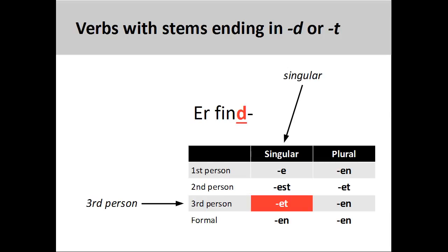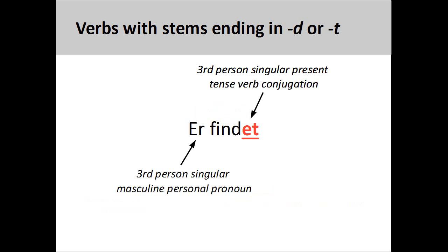We then need to find the correct third person singular verb ending on the chart. Here, the appropriate ending '-et' is marked in red. We then add that ending to the verb stem to produce 'er findet', 'he finds'. Both the subject and verb are in third person singular, creating subject-verb agreement.